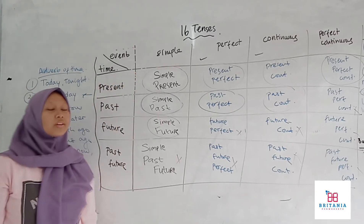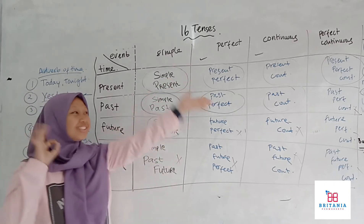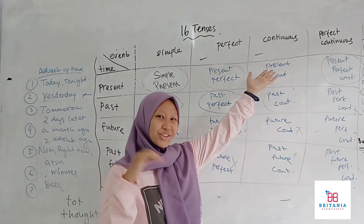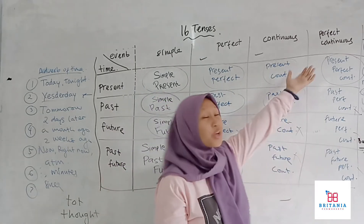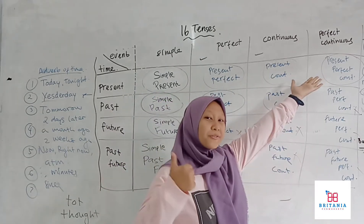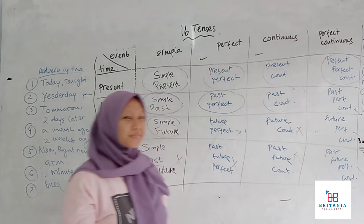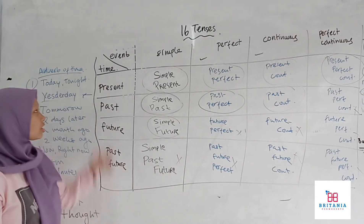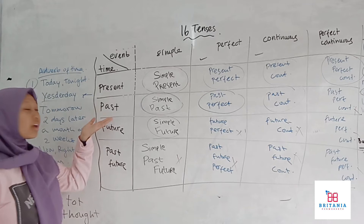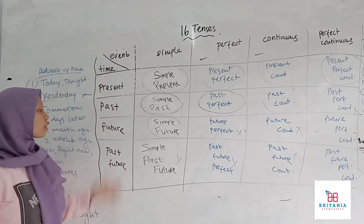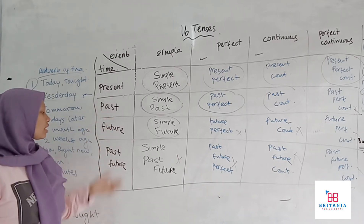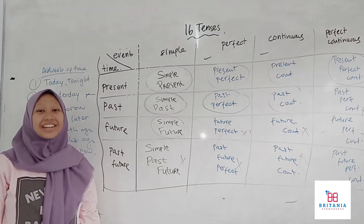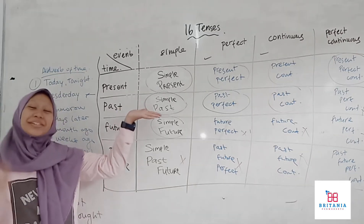They are simple, they are perfect, they are continuous, and the last one is perfect continuous. And there are 4 types. They are present, past, future, and past future.